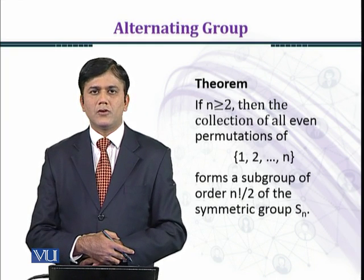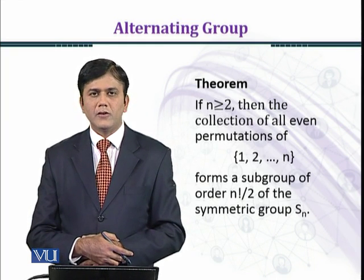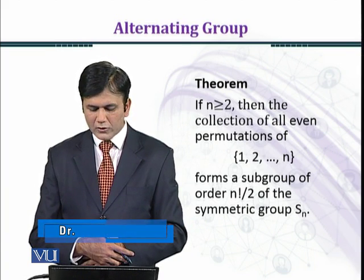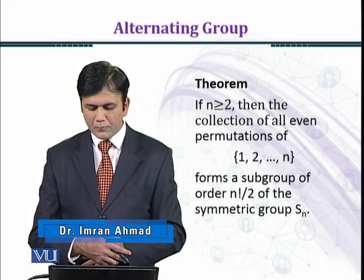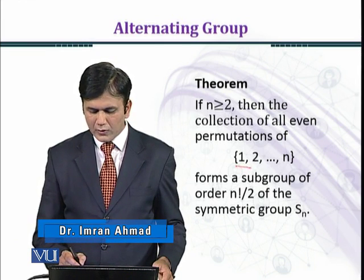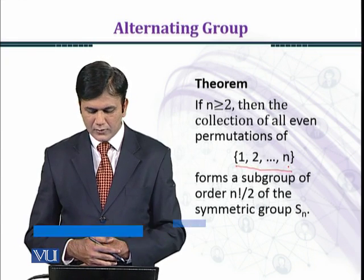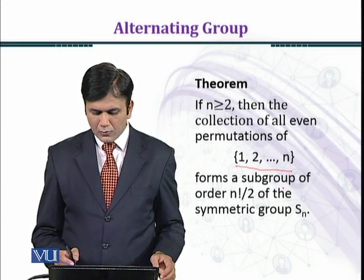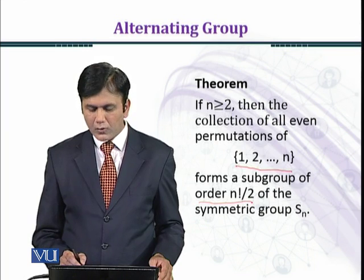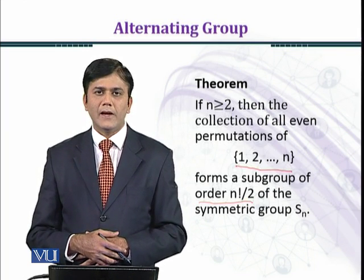Let's state the theorem. If n is greater than or equal to 2, then the collection of all even permutations of 1, 2, up to n letters forms a subgroup of order n factorial over 2 of the symmetric group Sn.